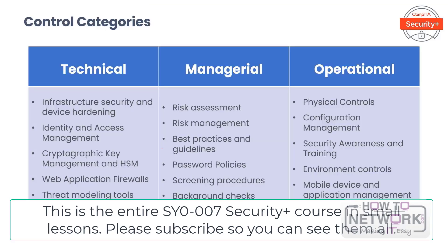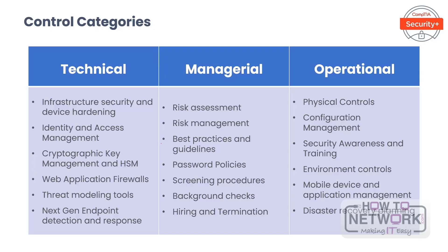To compare controls, it is helpful to understand the general taxonomy of controls. A control is simply a defense or countermeasure put in place to manage what we call risk. So if a risk cannot be completely avoided and transferred, but the organization is not willing to completely accept the risk, the most appropriate action is to mitigate the risk.